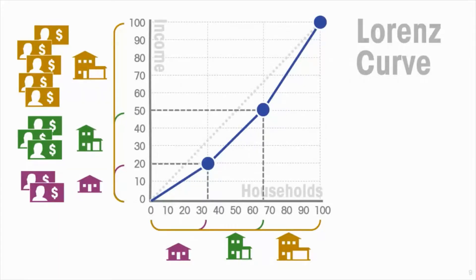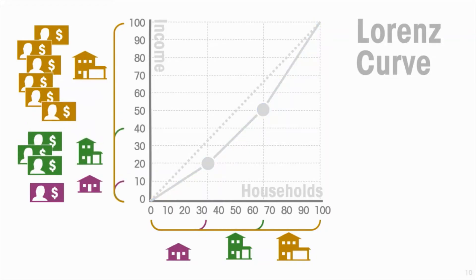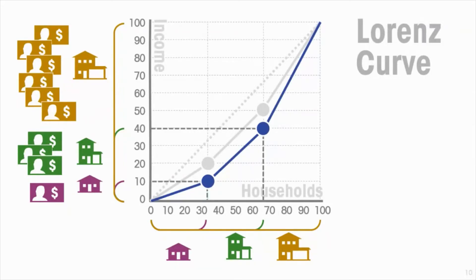The Lorenz curve gives us a representation of the degree of inequality. We'll illustrate this by changing the distribution of income. If we take a hundred dollars from the poorest household and have that earned instead by the wealthiest household, then plot the new Lorenz curve, the poorest third now earns only 10 percent of income and the poorest two-thirds earns 40 percent. The new Lorenz curve representing more inequality is further away from the diagonal than before — the greater the inequality, the further the Lorenz curve deviates from the diagonal.